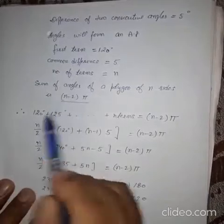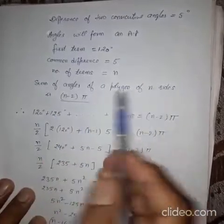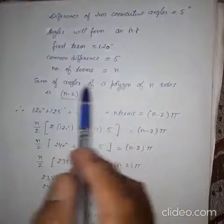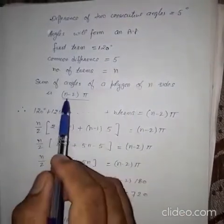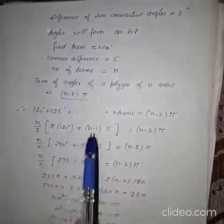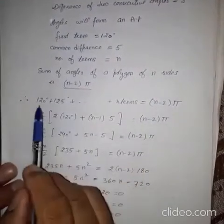Now, sum of angles of a polygon. We have a formula for this. This is N minus 2 into pi. In a N sided polygon, the sum of all angles of the polygon that will be N minus 2 into pi.